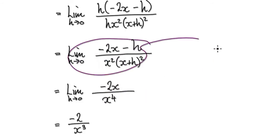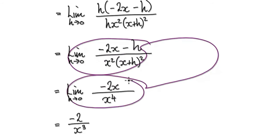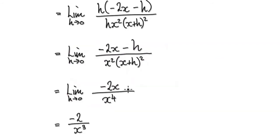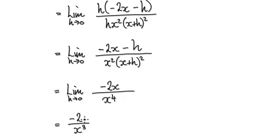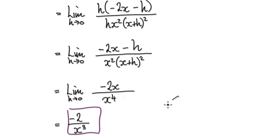From here that will then take you to this expression, and tidying it up — the limit is minus two over x to the power of three.